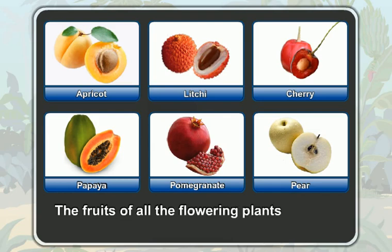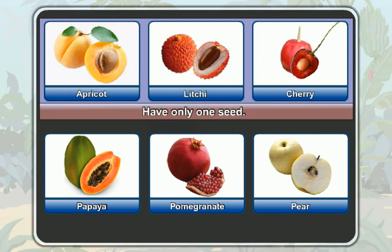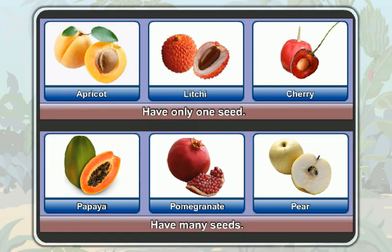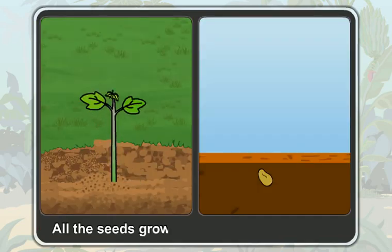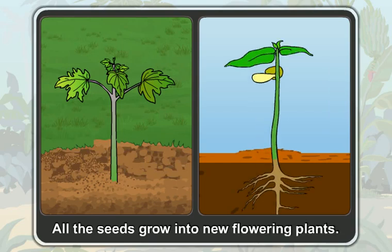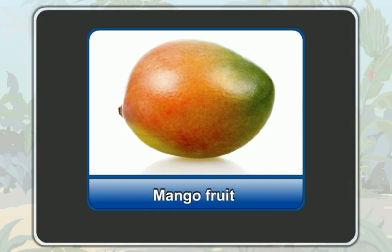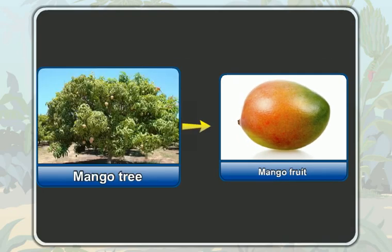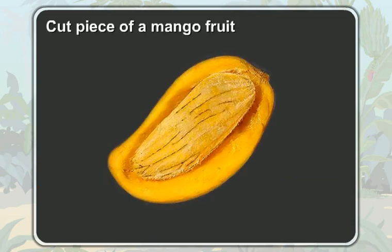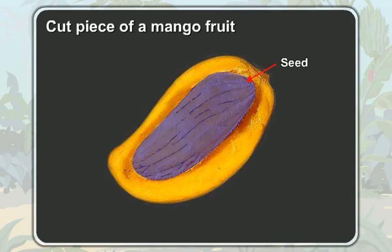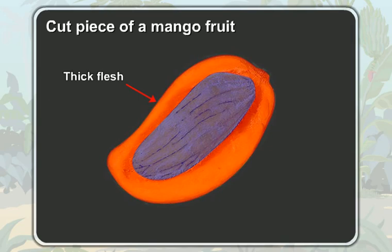The fruits of all the flowering plants contain seeds inside them. Some of them have only one seed, while others have many seeds inside them. And all the seeds grow into new flowering plants. A mango fruit is the fruit of a mango tree, isn't it? Now, look at the cut piece of a mango fruit. You see a mango seed at its center.